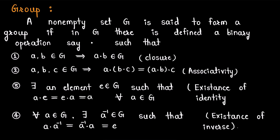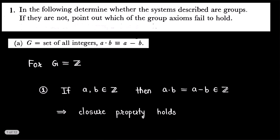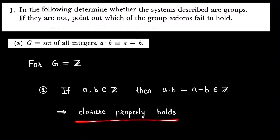Now we are ready to solve our question. The first given set is the set of all integers and the given binary operation is subtraction of integers. So for G equal to Z, if a and b are any two integers then a dot b by definition is equal to a minus b. We know that the subtraction of any two integers is again an integer, therefore closure property holds here.